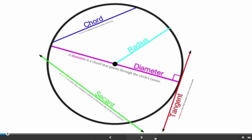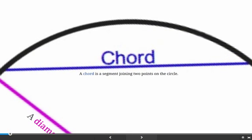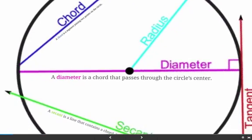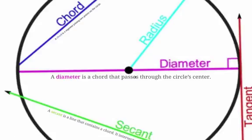There are also different line segments that are part of circles. First is a chord. A chord is just a line segment that joins two points on the circle — it goes from one place on the edge to another, and it has two endpoints. A diameter is a chord that passes through the circle's center. It's the largest chord, it cuts the circle directly in half, and the length of the diameter is always exactly twice the radius.